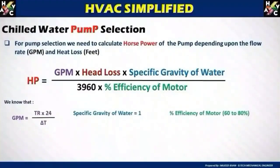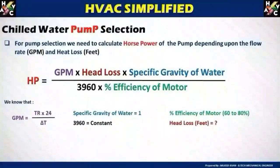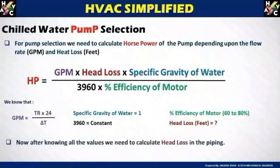The specific gravity of water is 1. The efficiency of the motor is usually taken between 60 to 80 percent. The constant 3960 is a fixed parameter. Head loss is calculated in feet, meters, or KPa. I have made a separate pump head calculation video which I will add in the link description where you can check it in detail.